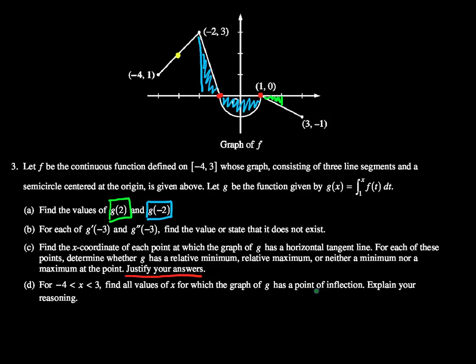All right, this point of inflection means that the concavity is changing from concave up to concave down or concave down to concave up. And we know that this happens when the second derivative, which if we recall from part B when we calculated the second derivative was the first derivative of f, changes signs.